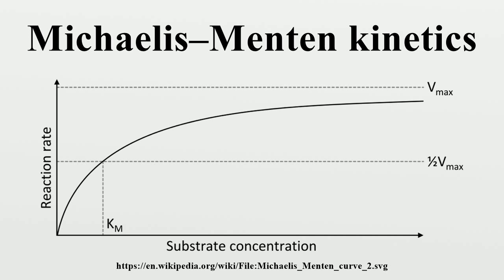An alternative analysis was undertaken by British botanist G. E. Briggs and British geneticist J. B. S. Haldane in 1925. They assumed that the concentration of the intermediate complex does not change on the time scale of product formation — known as the quasi-steady-state assumption or pseudo-steady-state hypothesis. Combining this relationship with the enzyme conservation law gives the concentration of the complex, where Km is the Michaelis constant, comprising the constants for substrate unbinding, conversion to product, and binding to the enzyme. Hence the velocity of the reaction follows accordingly.